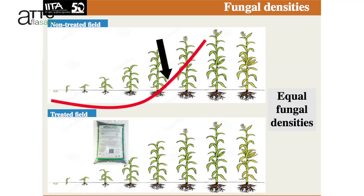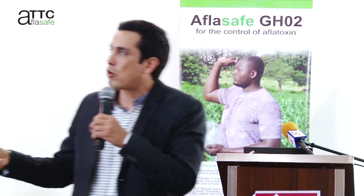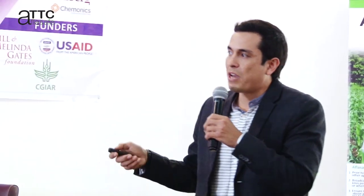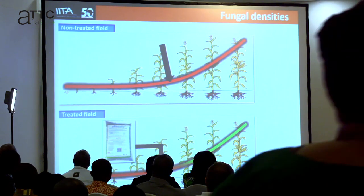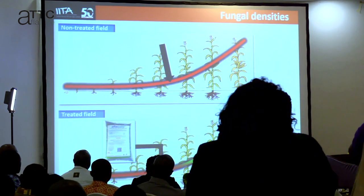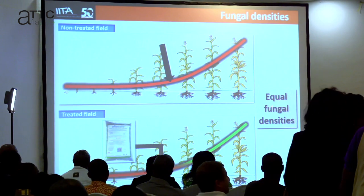What we do is apply Aflasafe just before this natural increase — two to three weeks before flowering. Instead of having a crop associated with the toxigenic community, we have a crop associated with the Aflasafe fungal strains. This is a very simple intervention: we are just dictating which community is going to be associated with the crop, without increasing the density of Aspergillus propagules in the environment.